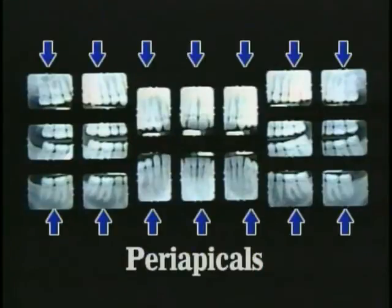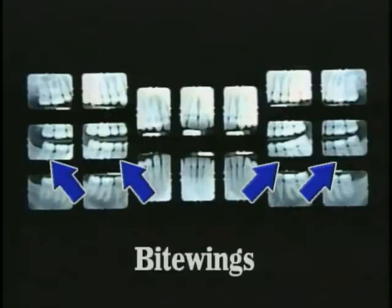Let's define full series of x-rays or FMX. A full series is comprised of 16 to 18 films and provides accurate images of an entire adult dentition. Fourteen of these films are called periapicals and two to four of these films are called bite wings.